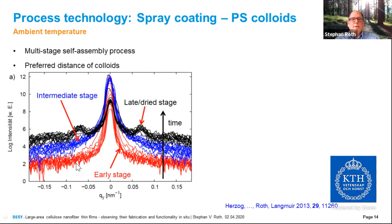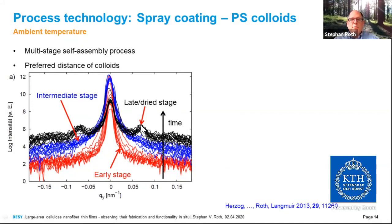The red curves depict the early stage: characterized by a relatively sharp middle maximum and no structures outside. As drying continues, this feature broadens and we enter the intermediate stage (blue curves), where the middle peak has a sharp component but the foot regime is already very broad, and side maxima start appearing. This means that during drying, the colloids come closer and closer together as the solvent evaporates and the concentration of colloids in the remaining film increases. In the late or dry stage, the side maxima are very well pronounced, indicating good ordering of the colloidal nanoparticles.